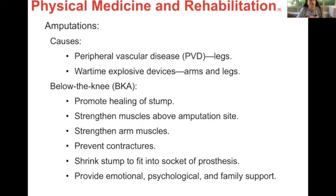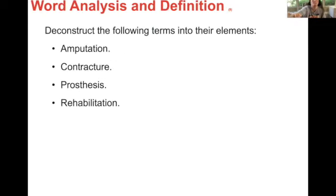Amputations: we talked about amputation in the previous chapter. Causes for amputation include peripheral vascular disease (PVD) for the legs and wartime explosive devices. BKA means below the knee, so that means they would be happening below the knee. Here are the reasons for them.